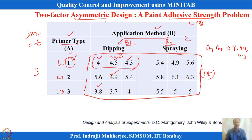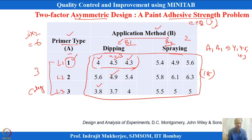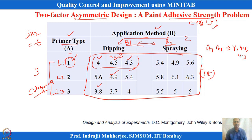The adhesive force Y is a continuous variable, while the factors — primer type and application method — are categorical variables with no natural ordering. In design of experiments, the response should be continuous to adopt analysis of variance. Factors can also be continuous, or a mixture of continuous and categorical variables.